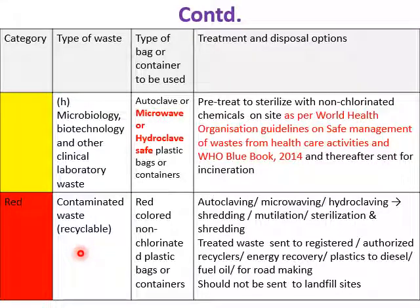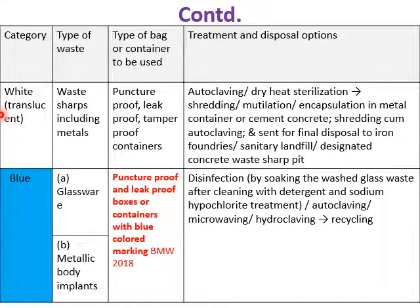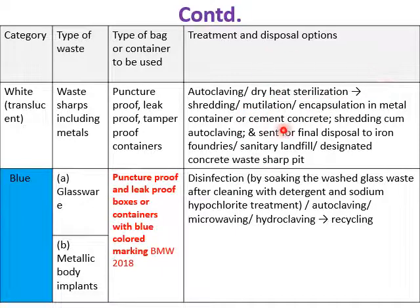Red category waste must be placed in red-colored non-chlorinated plastic bags or containers. Treatment: autoclaving, microwaving, or hydrocloving followed by shredding or mutilation to reduce volume; then sent to registered authorized recyclers for recycling, energy recovery, or road-making. These must not be sent to landfill sites. White category waste (sharps) must be kept in puncture-proof, leak-proof, tamper-proof containers, then autoclaved for dry sterilization followed by shredding or mutilation, or encapsulated in metal containers or with cement concrete.